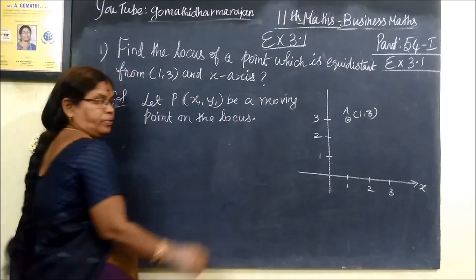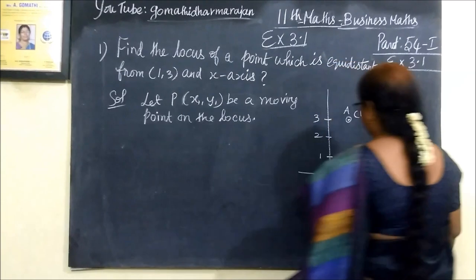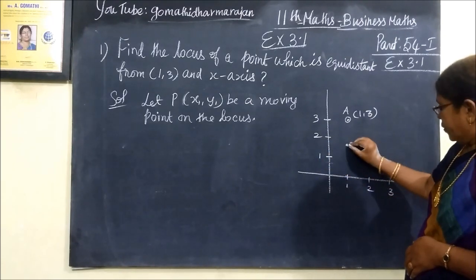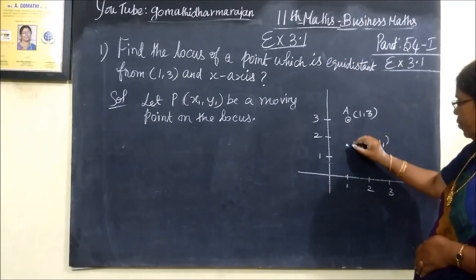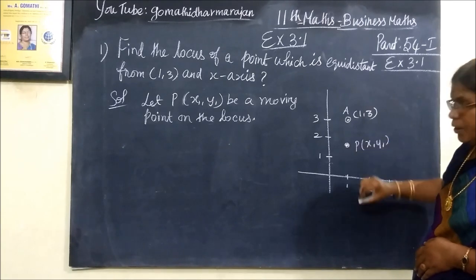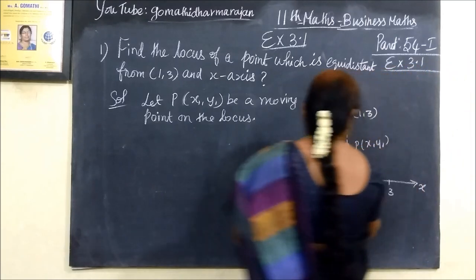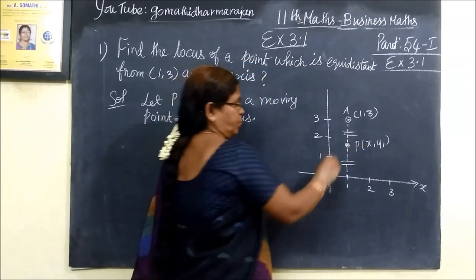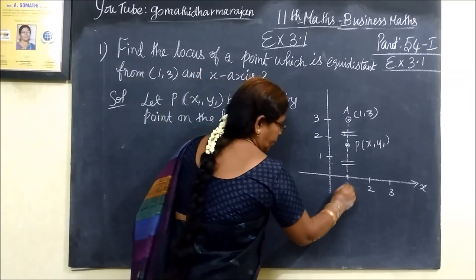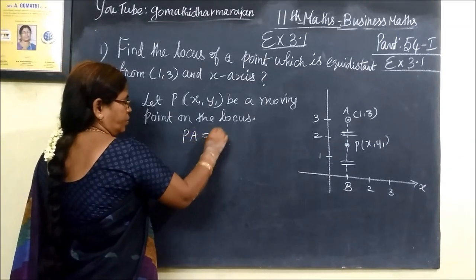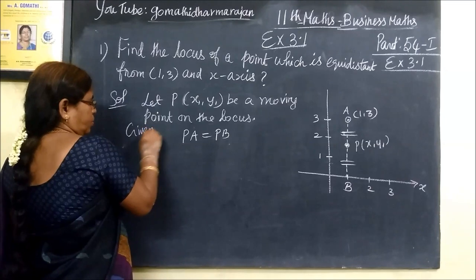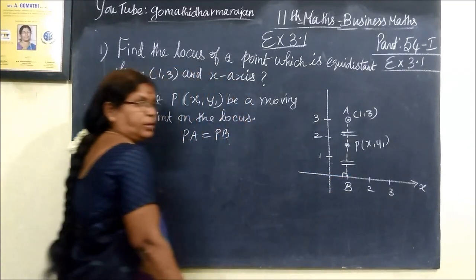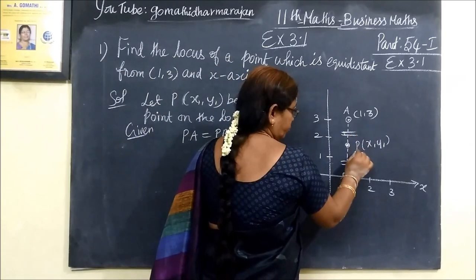We have a point on the locus. This is x-axis. PA equals PB. This is what we can do. P is a point, A and B. That means x-axis. This is equal distance.